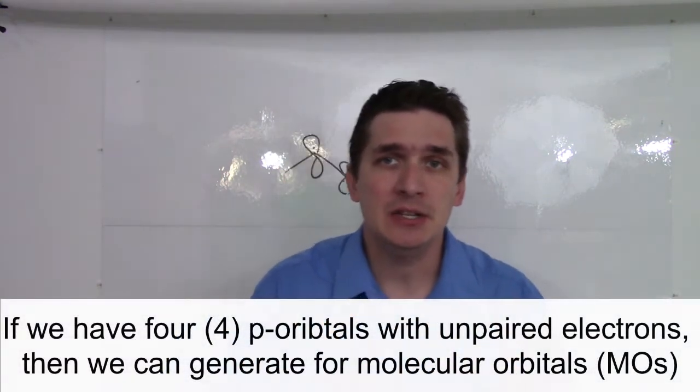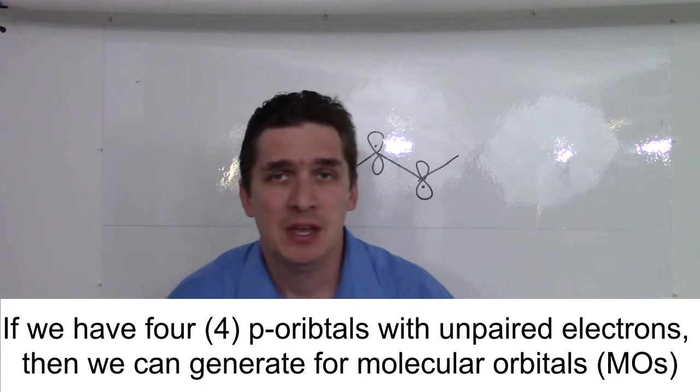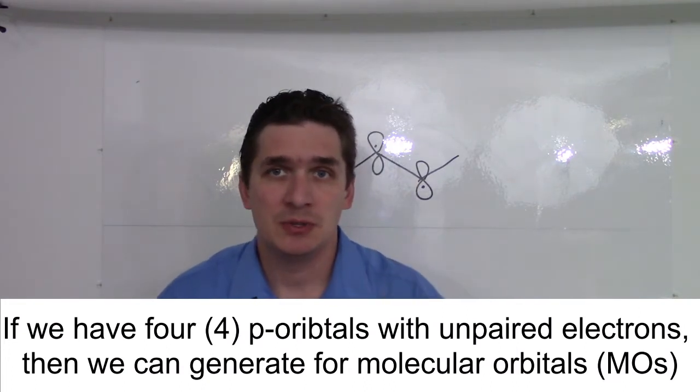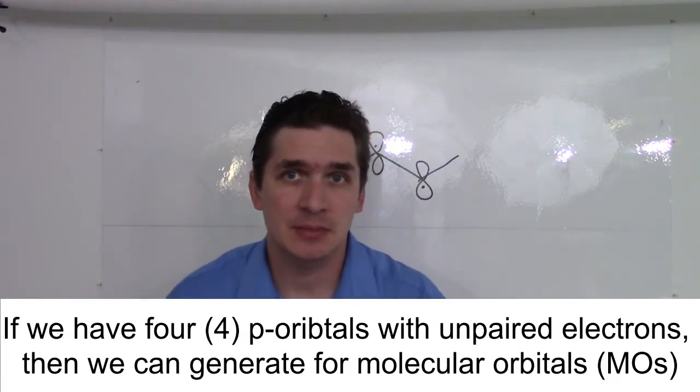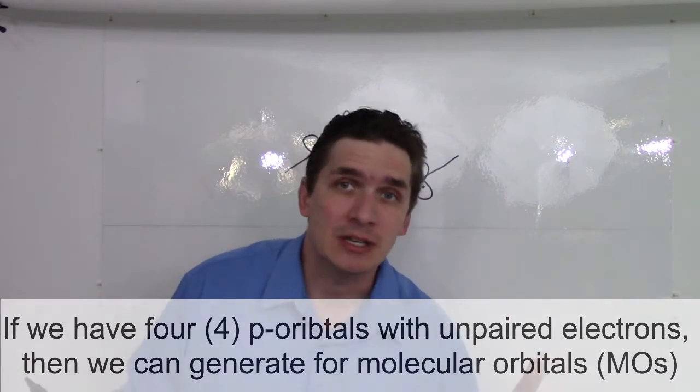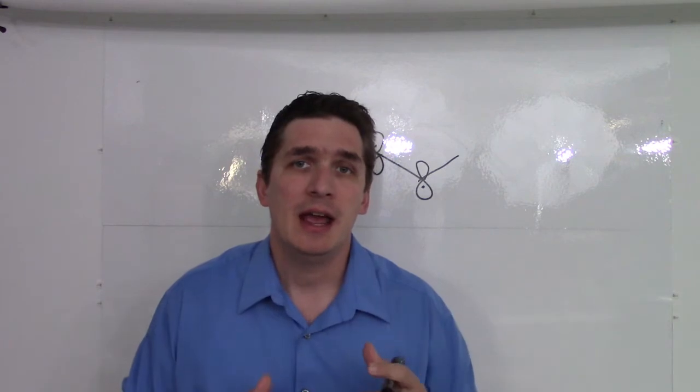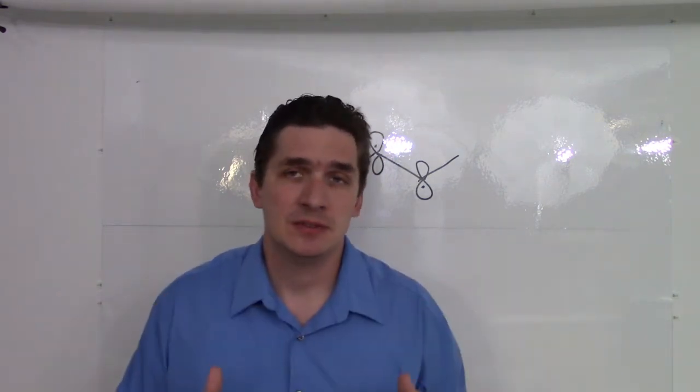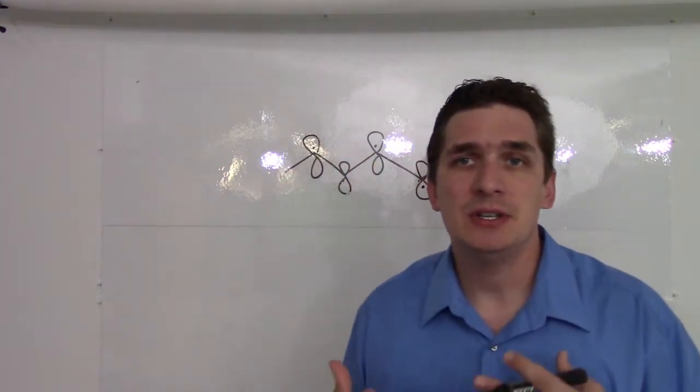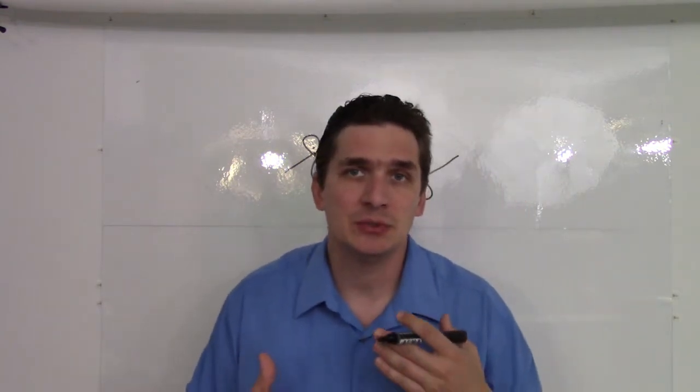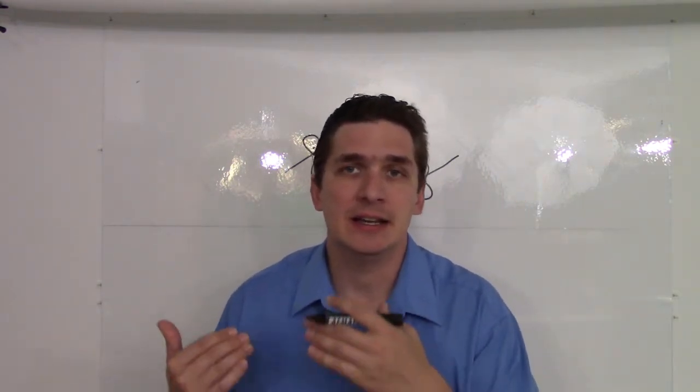Well, we actually use this SPDF progression. So there's one s orbital, so there's one s-type molecular orbital. There are three p orbitals, so there are up to three p-looking molecular orbitals, and 5D, so forth. Symmetry is what's going to set the number of actual s-like, p-like, d-like, and f-like orbitals.